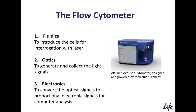Flow cytometers come in different shapes and sizes and may differ in the technology used in particle focusing. I've included an image here of one type of cytometer, an acoustic focusing cytometer called the Attune. Most flow cytometers consist of three systems: a fluidic system to introduce cells for interrogation by the laser, an optic system to select light signals, and an electronic system to convert the optical signal to proportional electronic signals for computer analysis. Together, these three systems permit measurements on suspensions of single cells and provide a distribution of the measured characteristics.